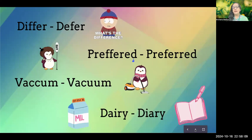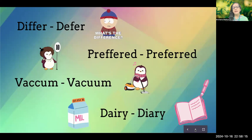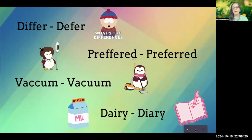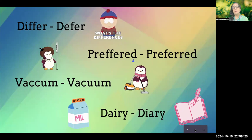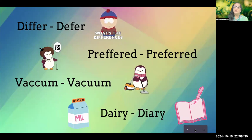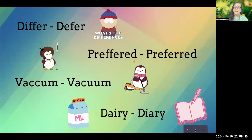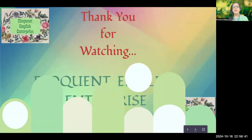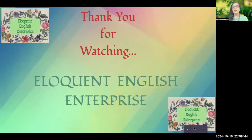Then there is dairy and diary — lots of people confuse these. D-A-I-R-Y is a dairy, where you get milk products. But a book or booklet where you write something is a diary — D-I-A-R-Y. The pronunciation is also different: dairy for milk products, diary for a notebook where you write.